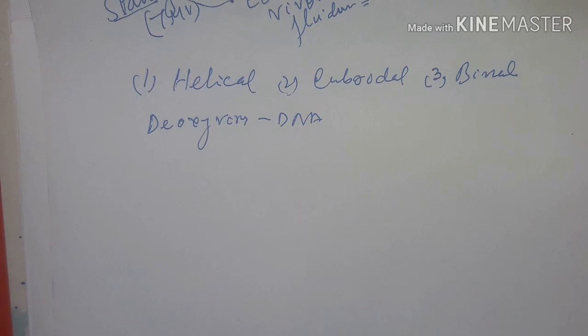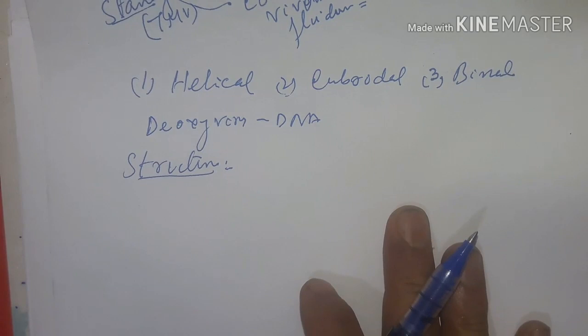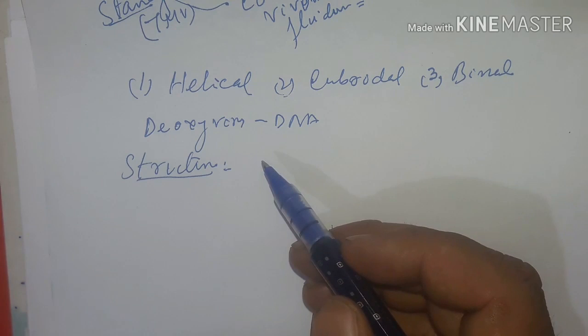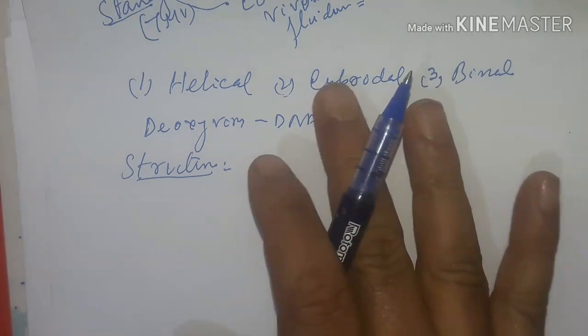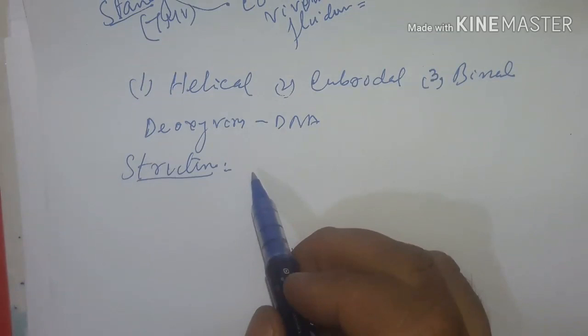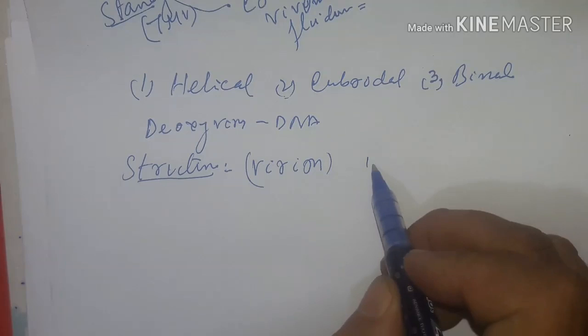Structurally, a virus consists of an envelope, capsid, nucleoid, and occasionally an enzyme. Protoplasm is absent; there is no energy-storing or utilizing machinery; motility and irritability are also absent. The metabolic machinery of the host cell is utilized for synthesis and assembly of viral components. Viral particles are inert outside the host cell; in a cell-free environment the virus is called a virion.